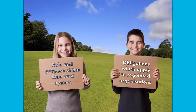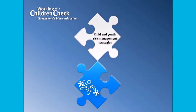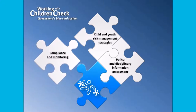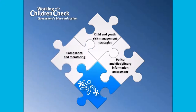We will discuss the role and purpose of the blue card system. The blue card system contributes to the creation of safe service environments for children in a number of ways. Namely, child and youth risk management strategies are required to be developed and implemented by all organisations that provide regulated services to children. Blue card checks are undertaken to determine a person's eligibility to work with children based on known police or disciplinary information. And compliance with risk management and blue card requirements are audited and police information of all cardholders is monitored on a daily basis.